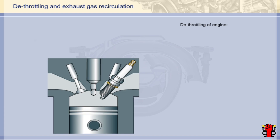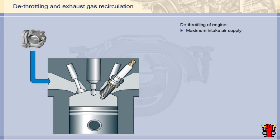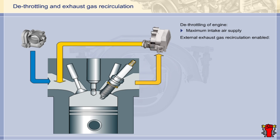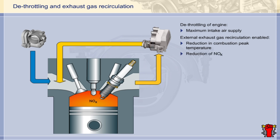In stratified charge mode, the engine is essentially de-throttled — the injection quantity is therefore no longer determined by the mass of air being supplied, ensuring maximum intake air supply under all operating conditions. External exhaust gas recirculation is also enabled in stratified charge mode. Feeding in exhaust gas with a low oxygen content lowers the combustion peak temperature and consequently reduces the formation of nitrogen oxides. This means that the intervals between storage catalyst regeneration phases — which require a switch to homogenous mode — increase, extending the duration of uninterrupted stratified charge operation.